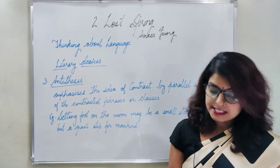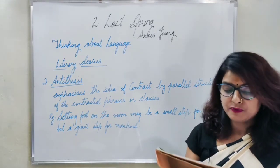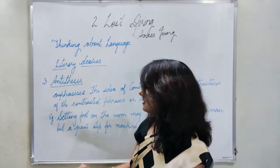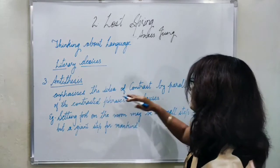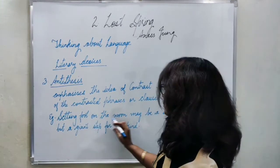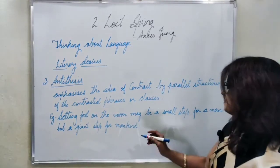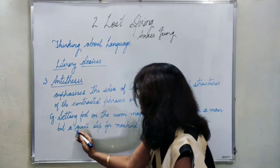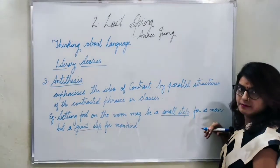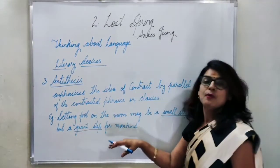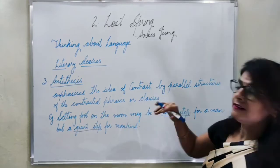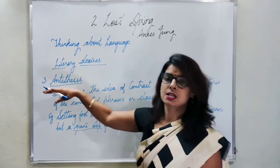The third sentence is 'Seemapuri, a place on the periphery of Delhi, yet miles away from it metaphorically.' The literary device here is antithesis. Antithesis emphasizes the idea of contrast by using parallel structures of contrasted phrases or clauses. For example: 'Setting foot on the moon may be a small step for a man, but a giant step for mankind.' Two opposite phrases — 'small step' and 'giant step' — are used in the same sentence with a parallel structure.